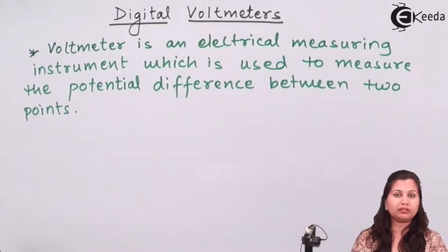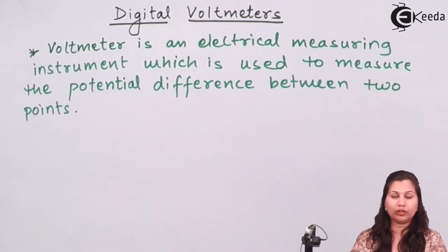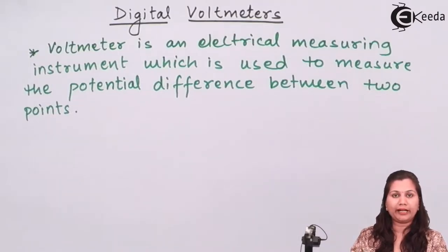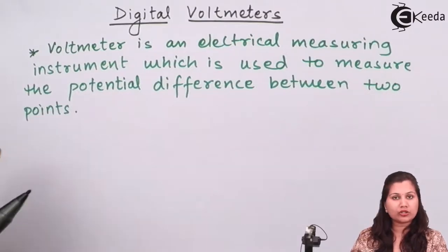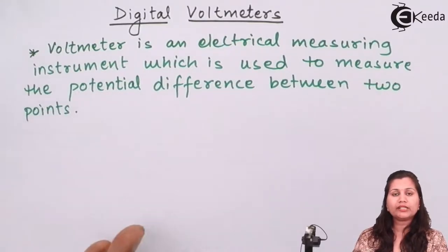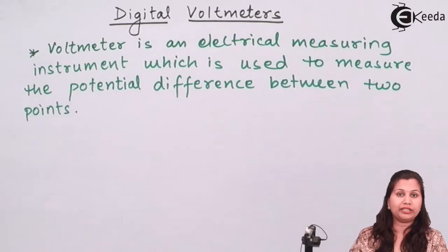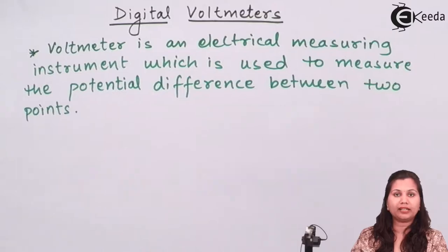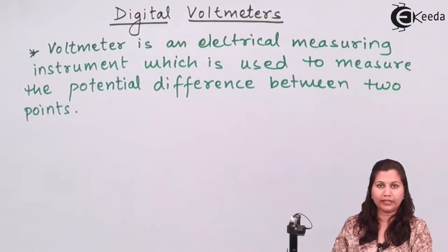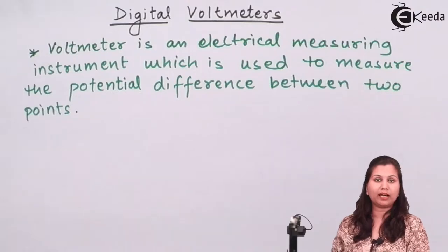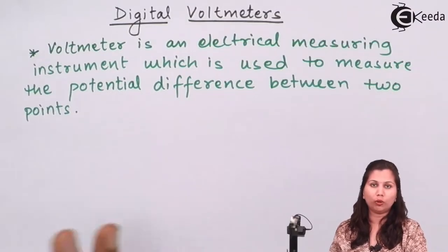The difference between the two is that the analog voltmeter gives us the reading of the voltage on a scale — there will be a pointer that deflects over a calibrated scale, and we read the readings from that scale. Whereas the digital voltmeter gives us the direct reading — it provides the discrete numerical value of the voltage.